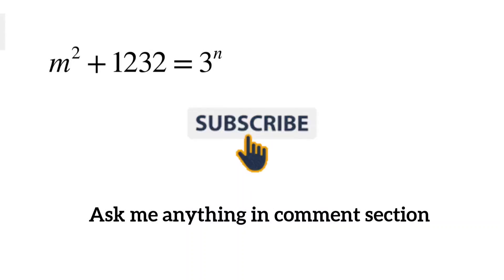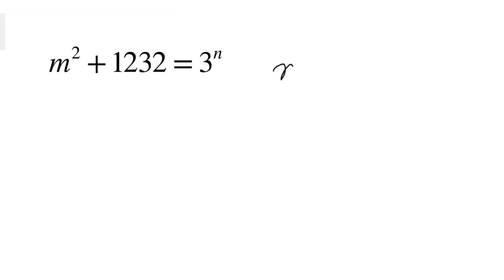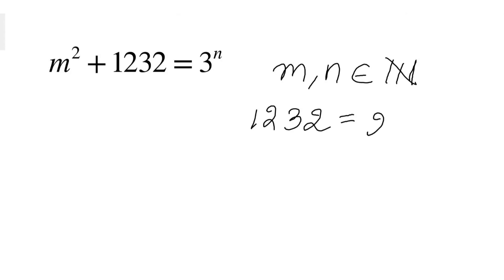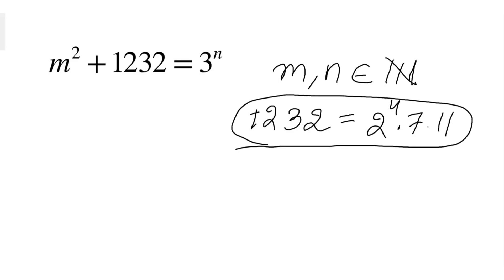Hello everyone, today we are going to solve this beautiful number theory problem where we have to find m and n such that they are natural numbers. Before attempting this question, let's see what is the prime factorization of 1232. This is 2 to the power 4 times 7 times 11. This is important because we are going to need it later. Modular arithmetic is a very important tool to solve this type of number theory problem.